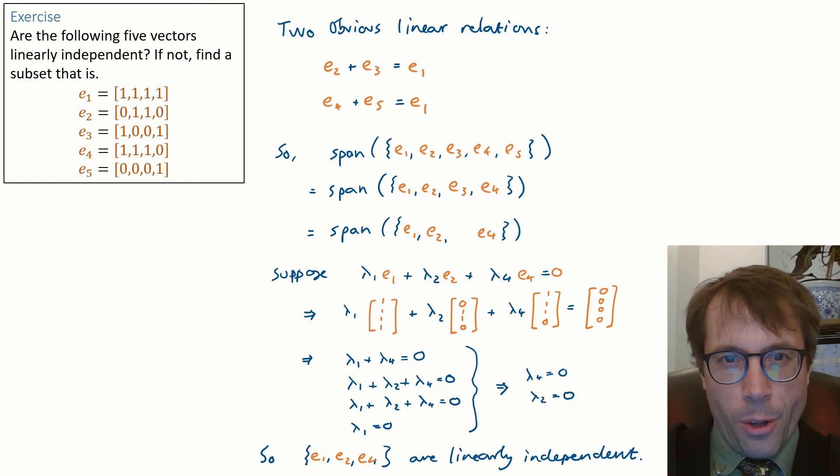Actually there's a simpler answer to this question. Let's reread it. Are the following five vectors linearly independent? No they're not. If not find a subset that is.